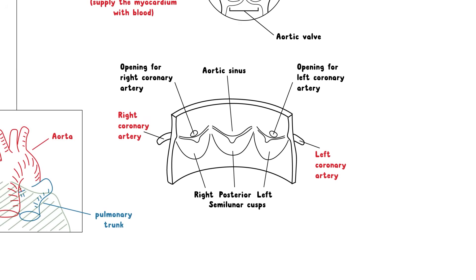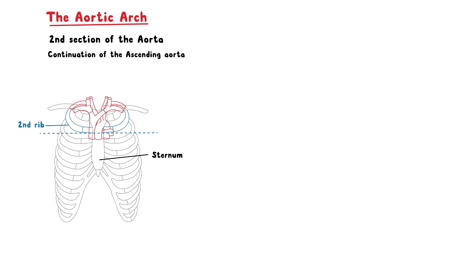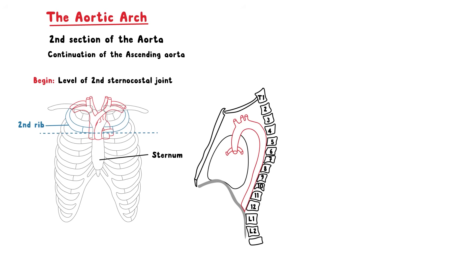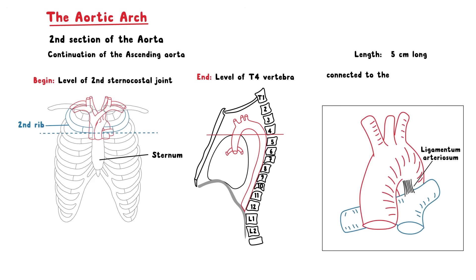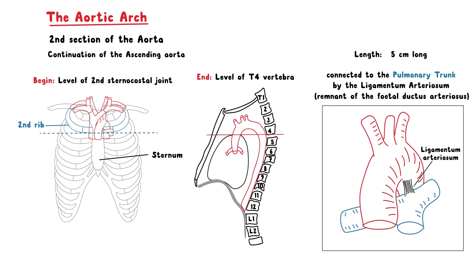The next part of the aorta is the aortic arch, which is the continuation of the ascending aorta. It begins at the level of the second sternocostal joint and arches superiorly, then posteriorly, and to the left before moving inferiorly. The aortic arch is approximately 5cm long and is connected to the pulmonary trunk by the ligamentum arteriosum, a remnant of the foetal ductus arteriosus, and terminates at the level of about T4 vertebrae.